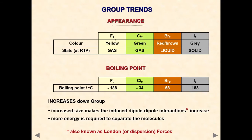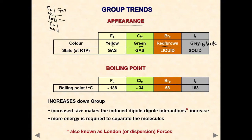Looking at appearance: fluorine is pale yellow, chlorine is green, bromine is reddish brown, and iodine is greyish black — essentially a black solid. In terms of state at room temperature and pressure: fluorine and chlorine are gases, bromine is liquid, and iodine is solid.